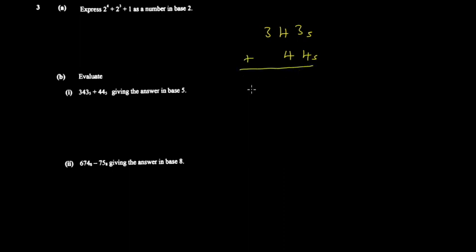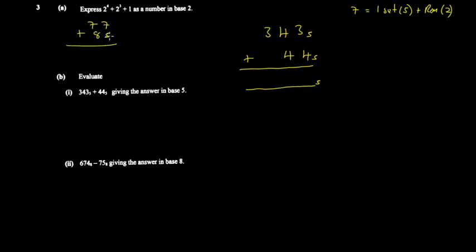Here you say 3 plus 4, which gives 7. But you don't write 7 because you're in base 5 — you break it down: 7 is one set of 5 plus remainder 2. To understand this, think of base 10: 7 plus 5 gives 15, which is one set of 10 plus remainder 5. You write the remainder and carry the one set of 10.